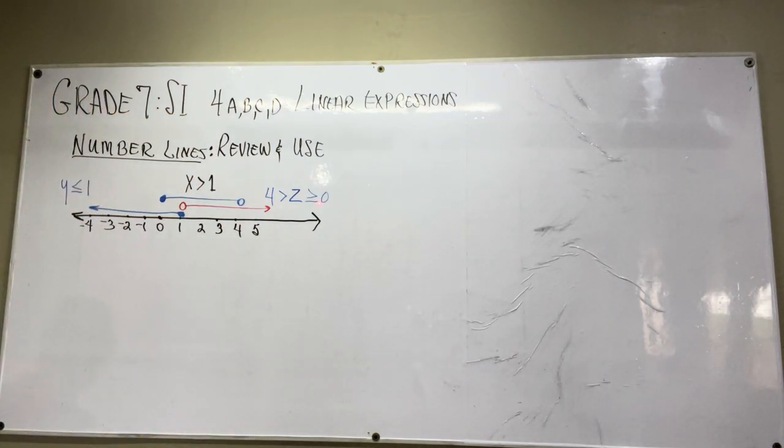Well, you can write it with the zero on this side too, however you want. So this says z is less than four but greater than or equal to zero. So that's how you would interpret what this means.